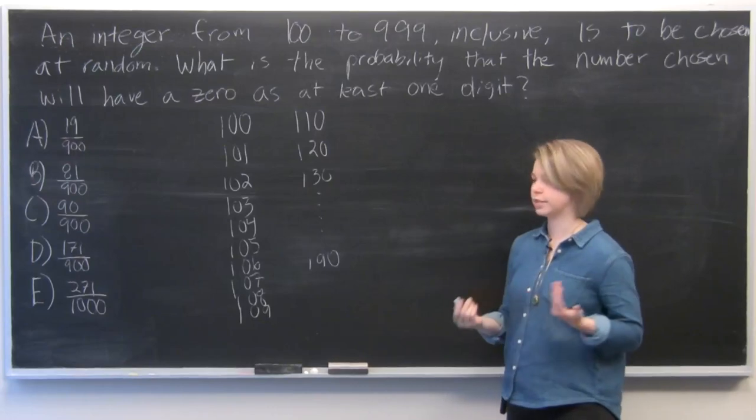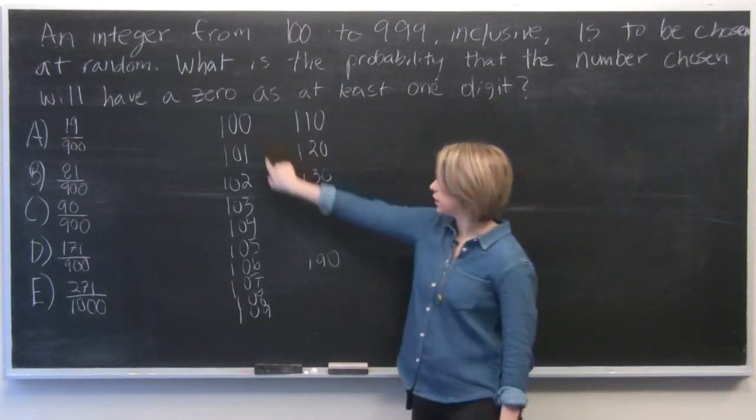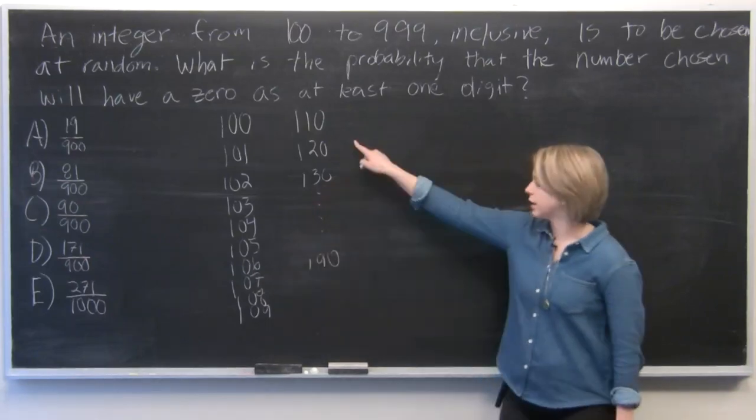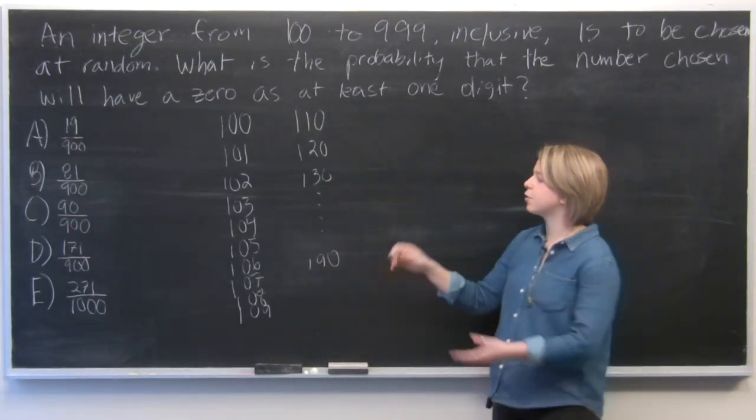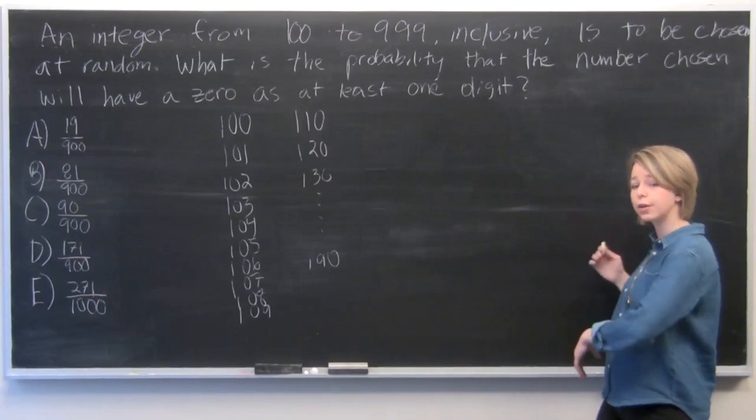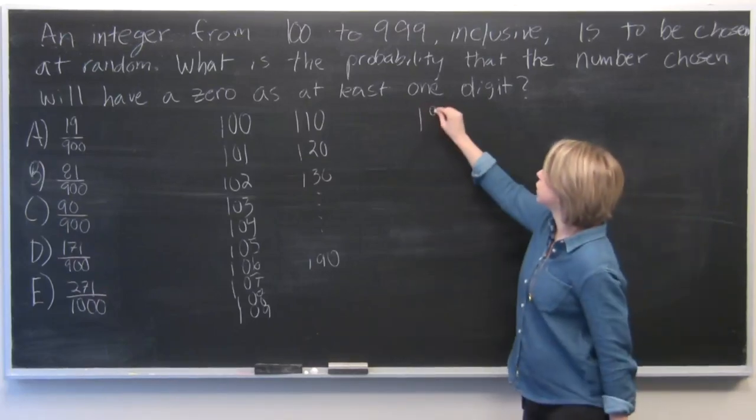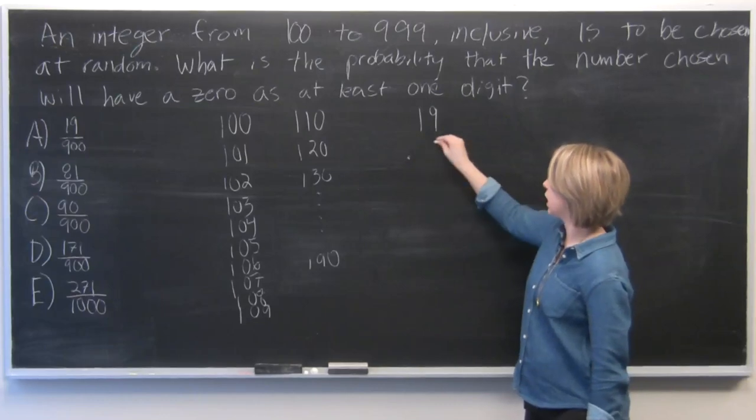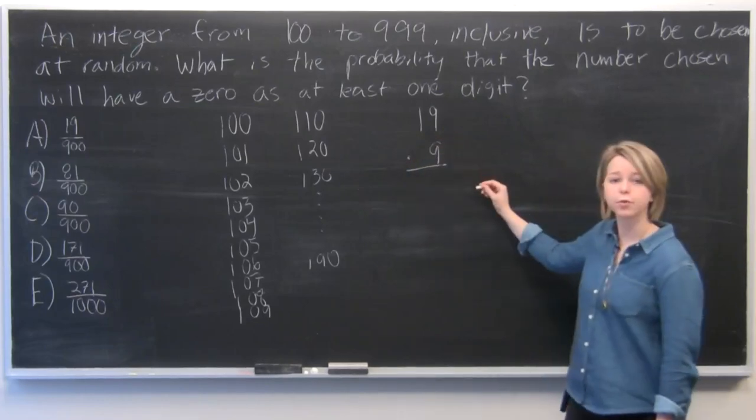We are going to simply multiply. So we've got 10 numbers here that have a zero as a digit and 9 numbers here. And we know that this set will repeat for each of 100, 200, 300, all the way through 900. So we've got 19 digits in total times 9 for each of the sets of 100, which equals 171.